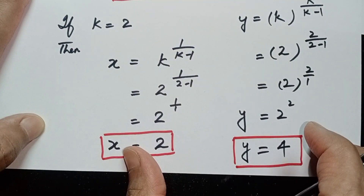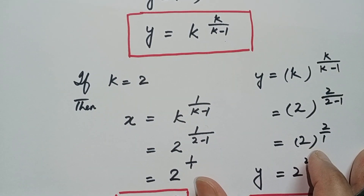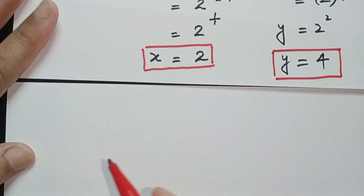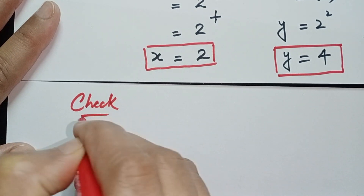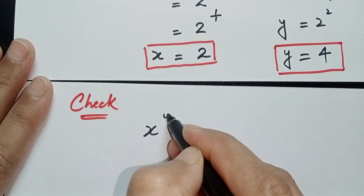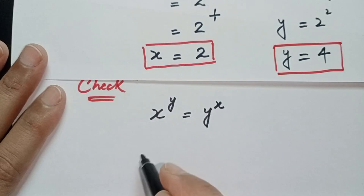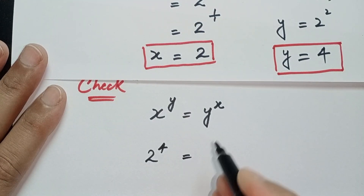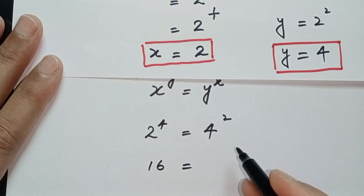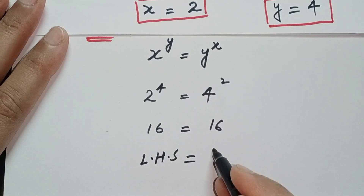We can verify these values in the original equation x to the power y equals y to the power x. Plugging in x equal to 2 and y equal to 4: 2 to the power 4 is equal to 4 to the power 2. 2 to the power 4 is 16, and 4 to the power 2 is also 16. So left hand side equals right hand side — verified.